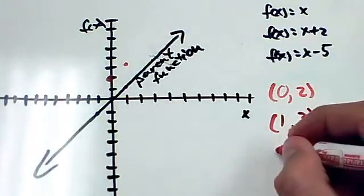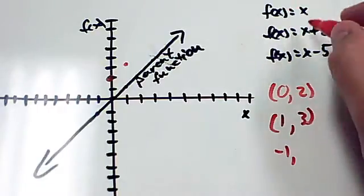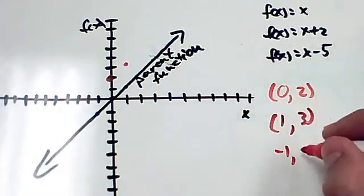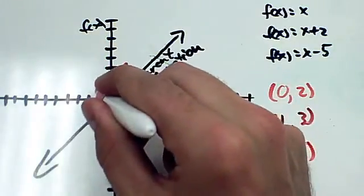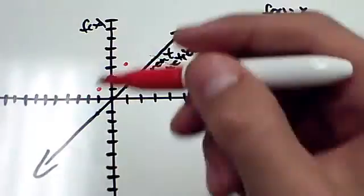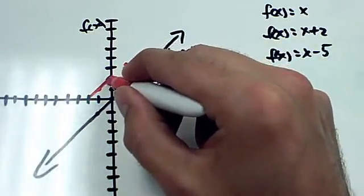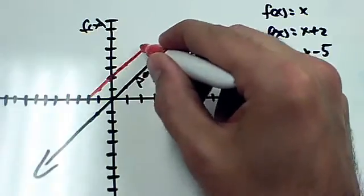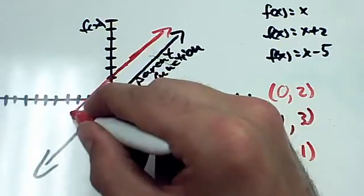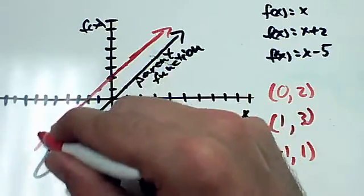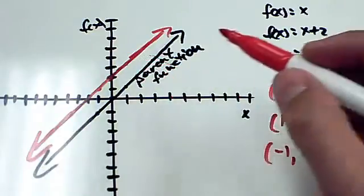When x is negative 1, y or f of x is negative 1 plus 2, which makes 1. So we'd have a point at negative 1, 1. Okay, and then we would have, I'm going to try not to touch the axes, because I don't want to, never mind. I'll just scrape a little. Okay, and so we should have this function here.